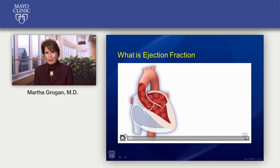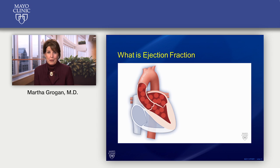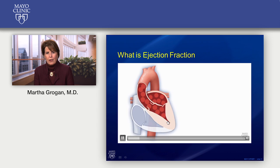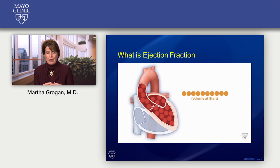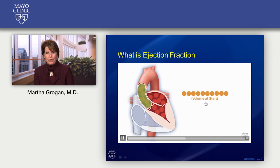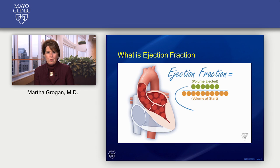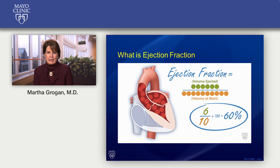Let's talk about ejection fraction. When you learn about the heart you'll hear about a number called ejection fraction. In amyloidosis especially, there's never one single number that tells us how severely the heart is affected or whether it's getting better or worse. Ejection fraction is simply the percentage of blood that is pumped out of your heart with every heartbeat. Your heart contracts and then relaxes — and when it relaxes, that's when it fills with blood. The ejection fraction is just the percentage of blood that entered the heart during relaxation that then gets pumped out.